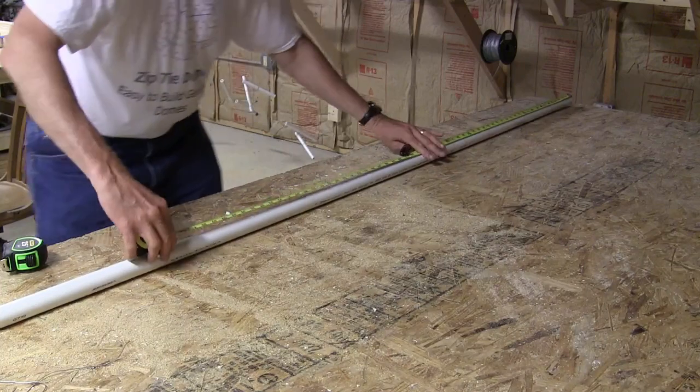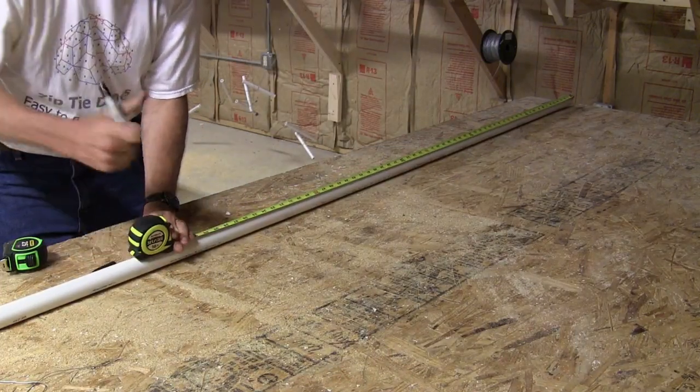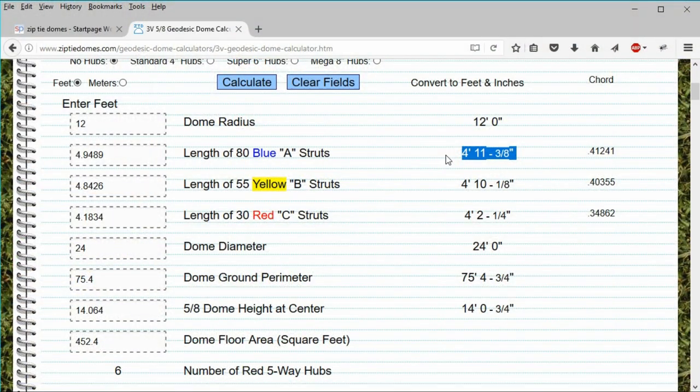If you are going to use a tape measure to cut your struts, you won't be able to use feet in a decimal format. You will need inches and fractions of an inch. So knowing that the blue A strut length is actually 4 feet 11 and 3/8 inches is something you would need to know before you can cut your struts.